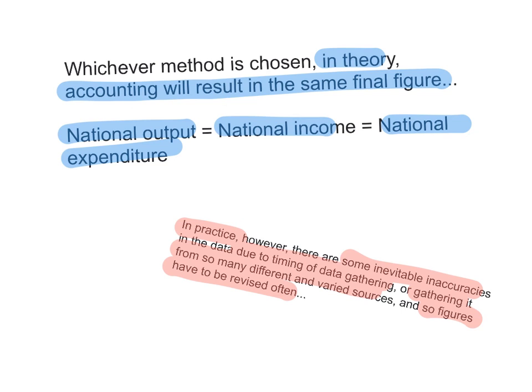Each method has a different government body in charge of measuring it. Due to differences in statistics and the timing of data gathering, in practice there are some inevitable inaccuracies. But in theory, national output should equal national income, which should equal national expenditure.